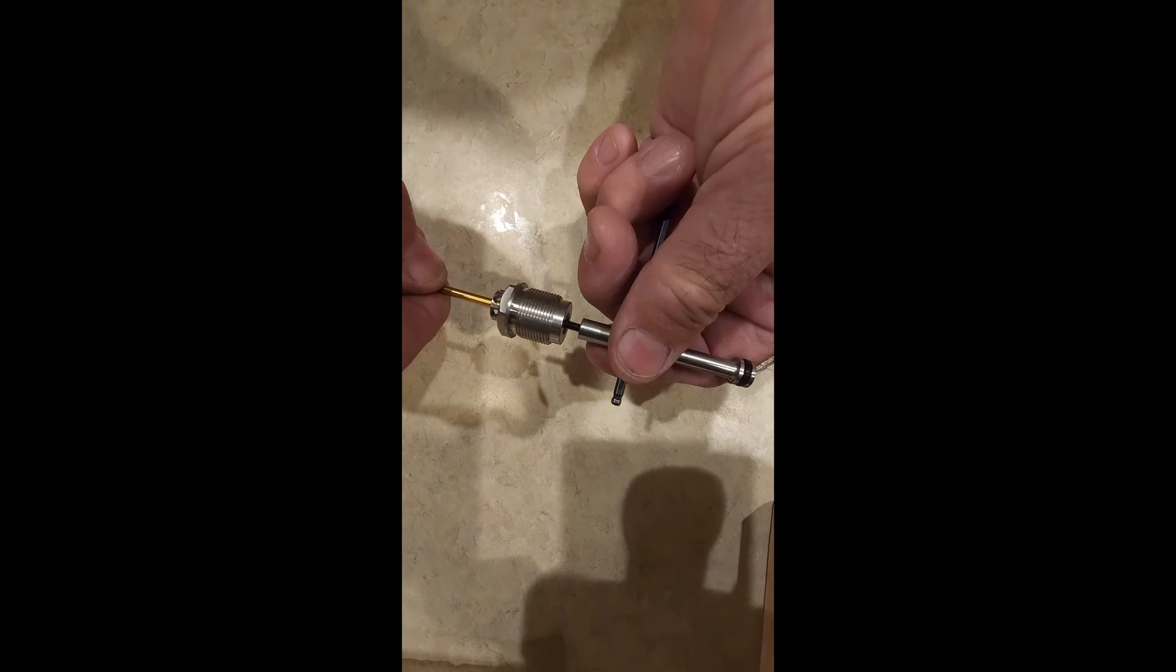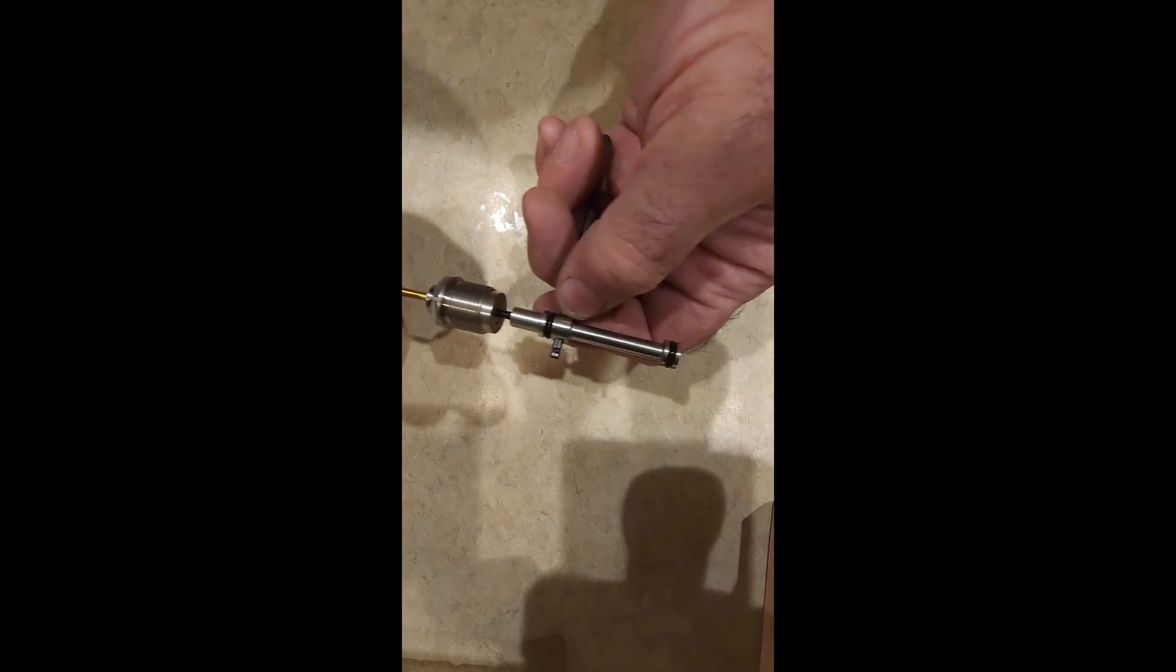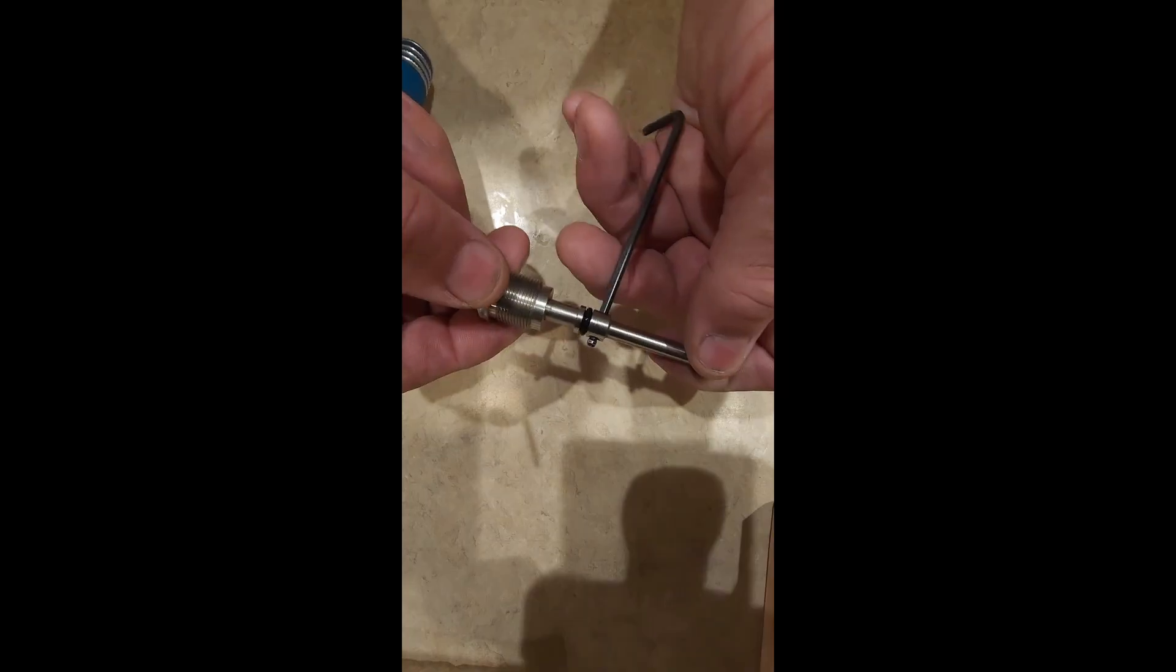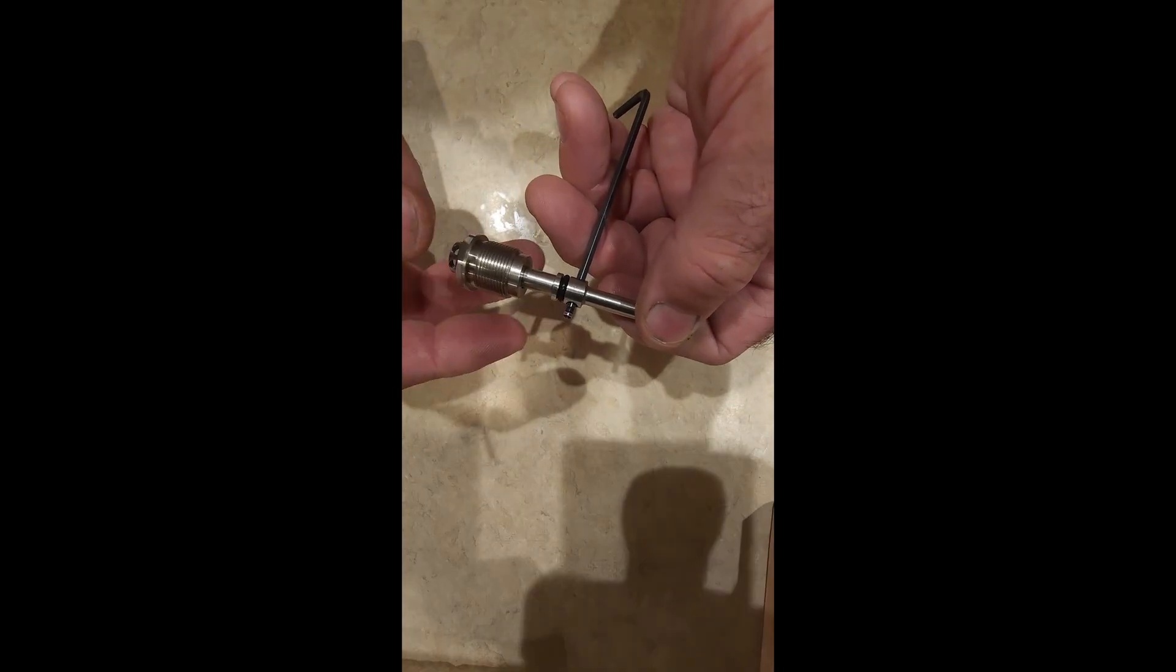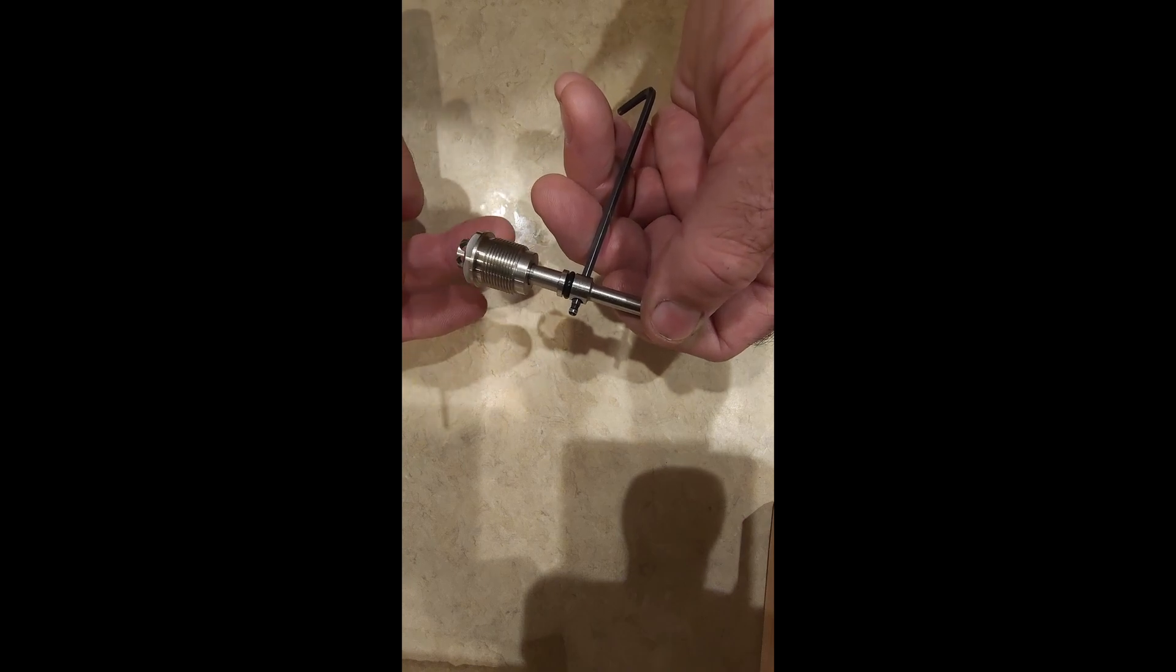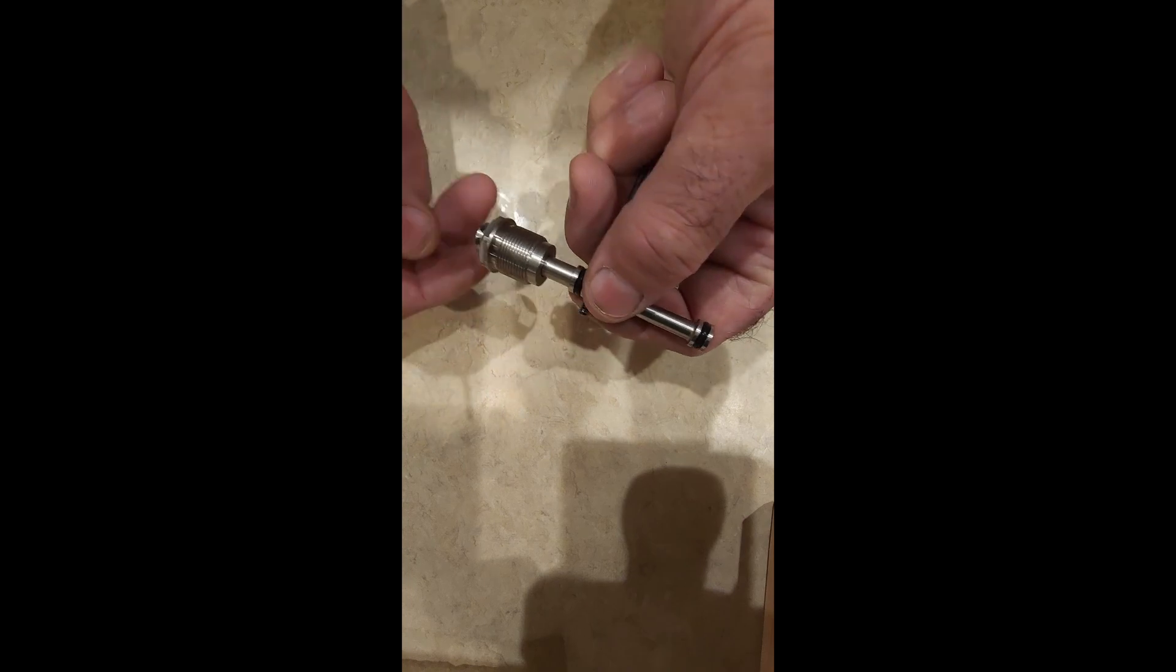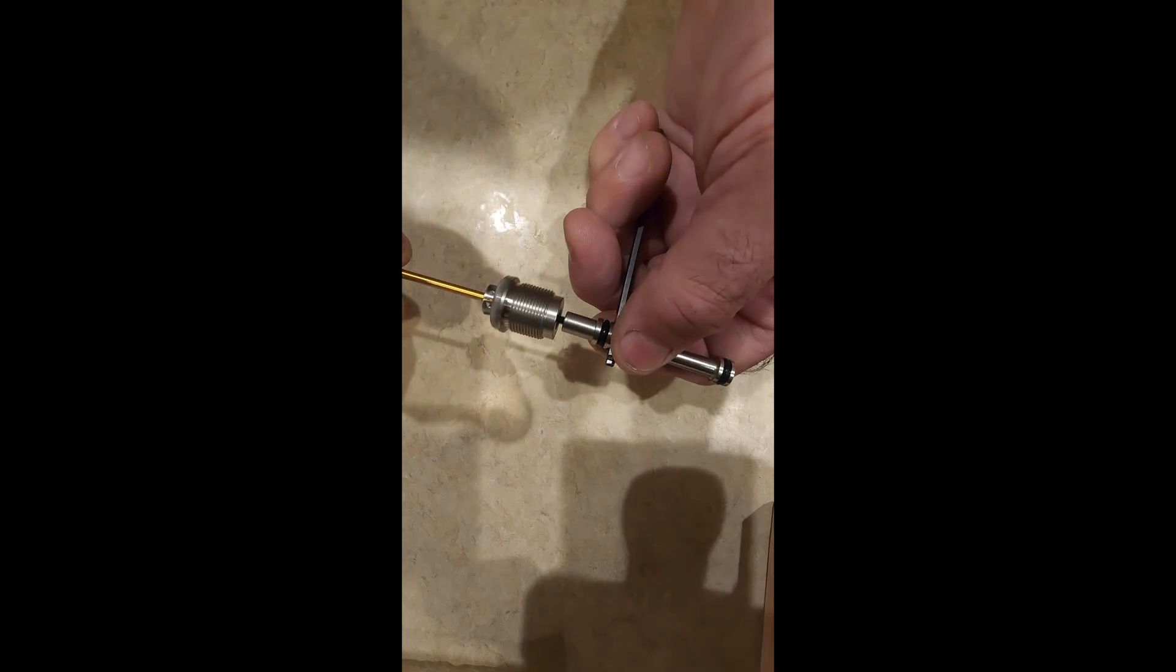And this is the screw you want to check for tightness. This one, if it gets loose, the piston will be floating. It'll be moving in and out. So as it's floating, it's changing your dwell. So you could get crazy shot strings and a little bit of movement can mean a very ugly shot string.